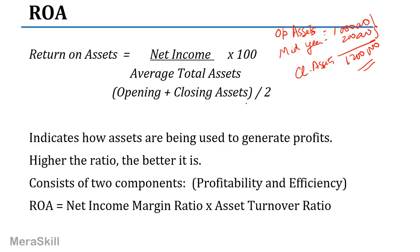So very simply, return on assets is the net income divided by assets multiplied by 100. When we take assets, if information is given we take opening plus closing divided by two. If information is not given, we assume opening and closing assets are the same and just take the closing assets figure. This indicates how the assets are being used to generate profits — higher the ratio, the better.